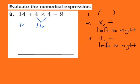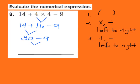I bring down the rest of the problem: I now have 14 plus 16 minus 9. Step 3 says add or subtract from left to right. I have both addition and subtraction, so I perform them left to right — addition comes first. 14 plus 16 gives me 30. Then 30 minus 9 leaves me with an answer of 21. Evaluating this expression following the order of operations gives 21.